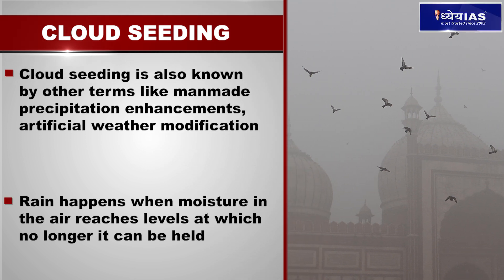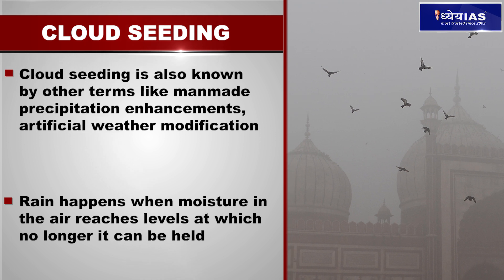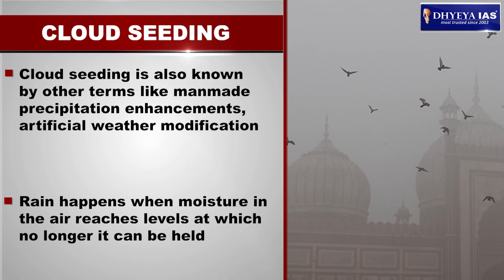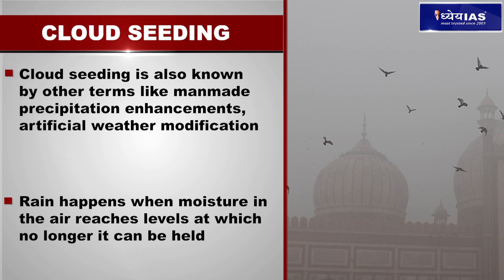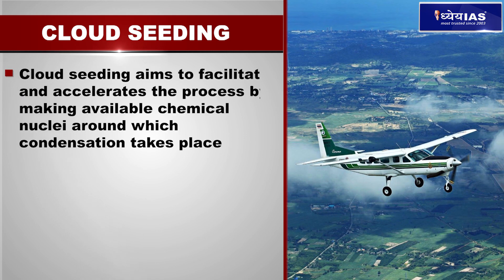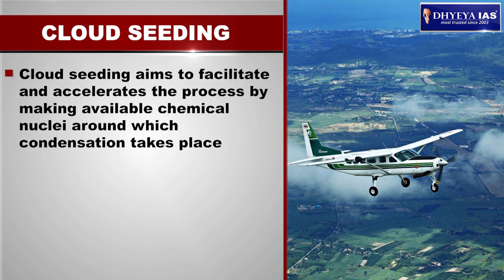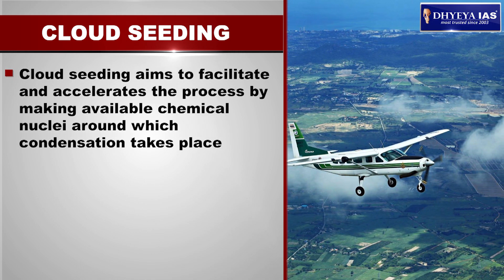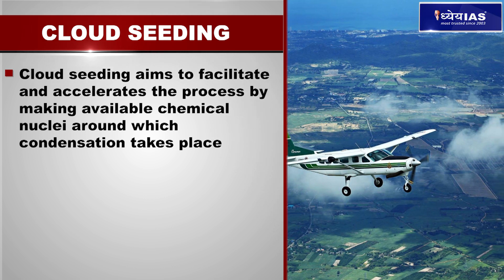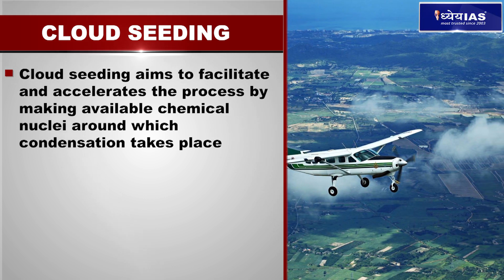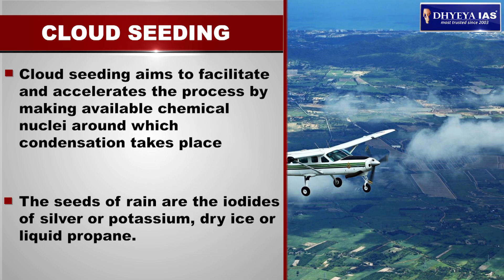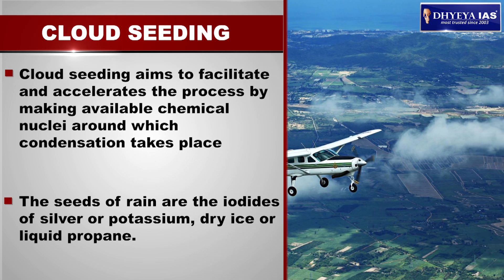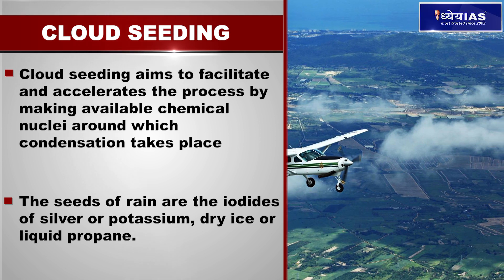It works when there are pre-existing clouds in the atmosphere. Rain happens when moisture in the air reaches levels at which it can no longer be held. Cloud seeding aims to facilitate and accelerate this process by making available chemical nuclei around which condensation takes place. The seeds of rain are silver iodide or potassium iodide, dry ice, solid carbon dioxide, or liquid propane.